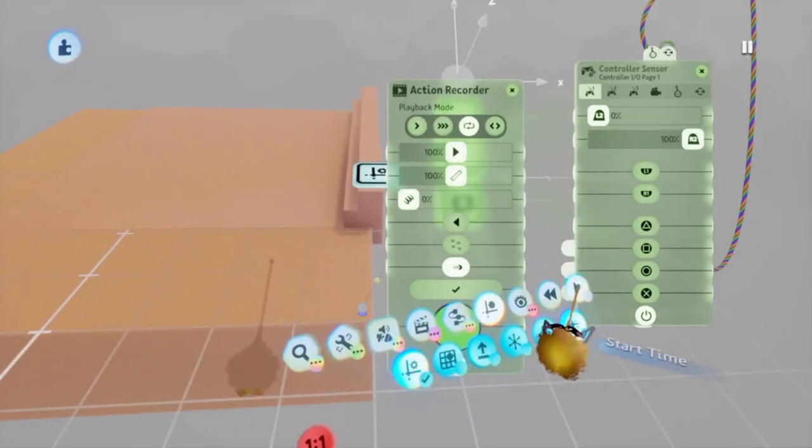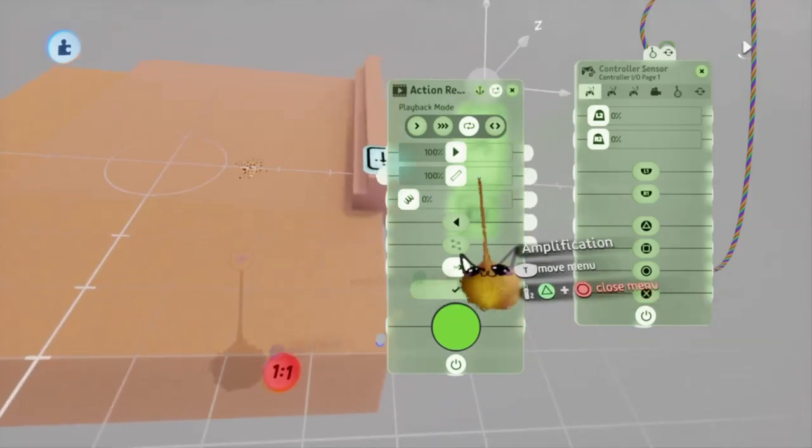Now in play mode, you can see the wiggle and using the options, you can amplify or smooth out the movement.